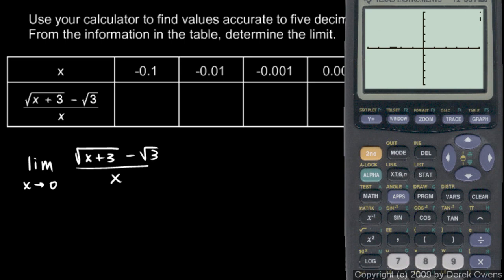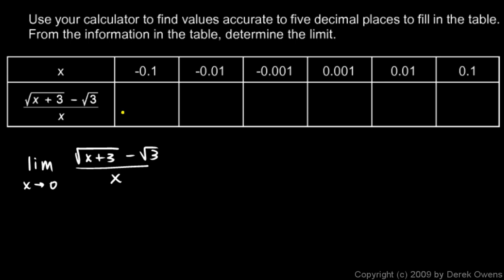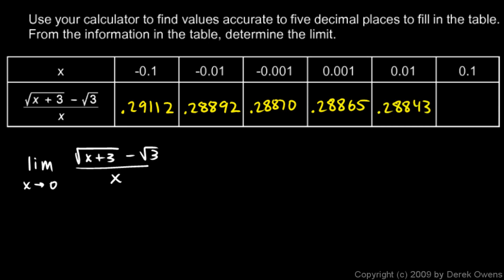We hit graph — we don't really see much and that's okay, since we're interested in values, not the graph. Using trace, we put in negative 0.1 and get 0.29112. For negative 0.01 we get 0.28892. For negative 0.001 we get 0.28870. On the right side of zero: at 0.001 we get 0.28865, at 0.01 we get 0.28843, and at 0.1 we get 0.28843.